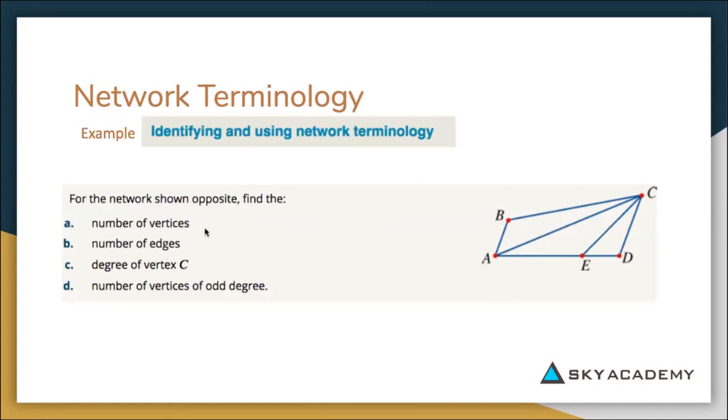The number of edges—so you just count up how many edges there are between the vertices. So from A to B, B to C, C to D, E to C, C to A, E to A, and E to D. So it'd be seven.